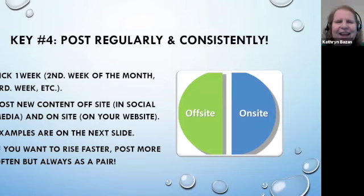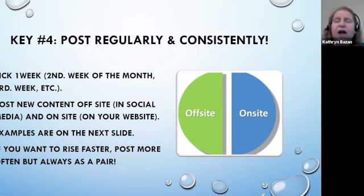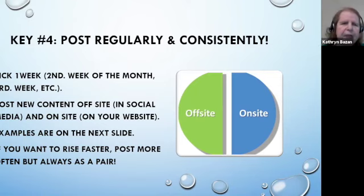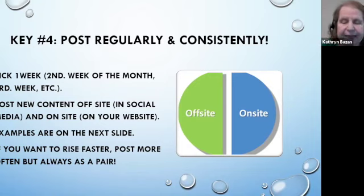Key number four to getting onto Google's page one: post regularly and consistently, both on-site and off-site. On-site is new content on your website — a blog post, a web page, or a landing page. Off-site is any one social media channel. So long as you've got new content going up within a seven-day period on your blog and on one social media channel, and you do that at least once a month, Google knows you're alive. If you do it more often, it's much easier to get onto page one.